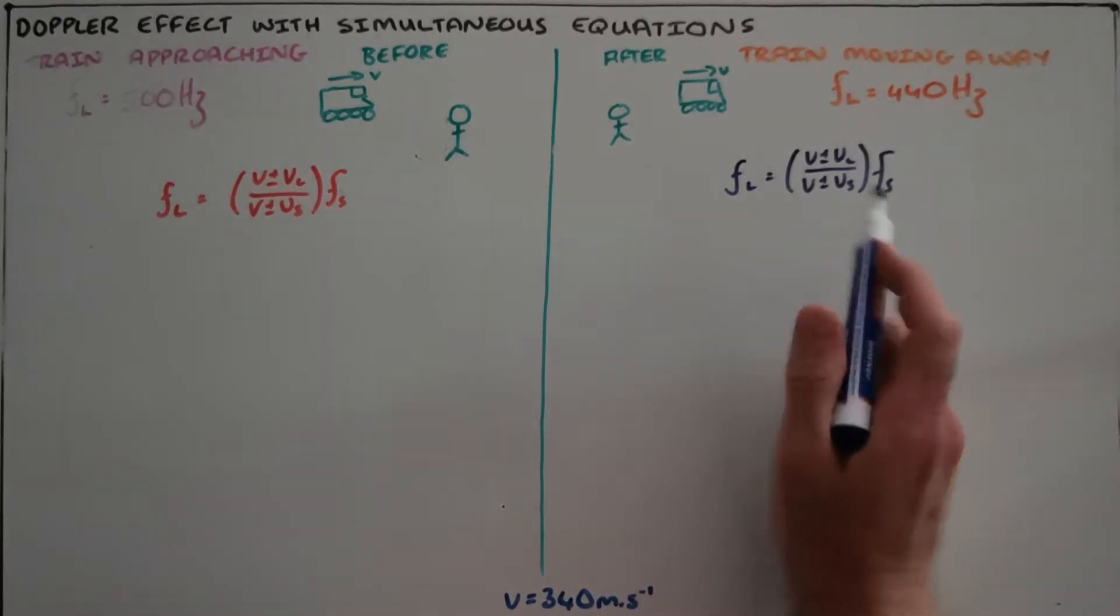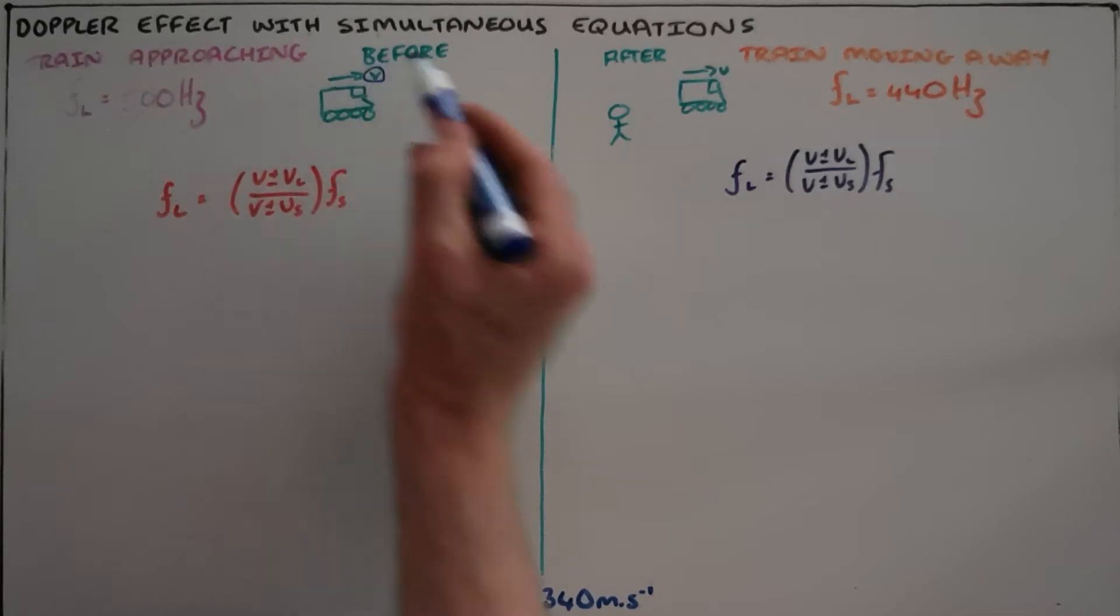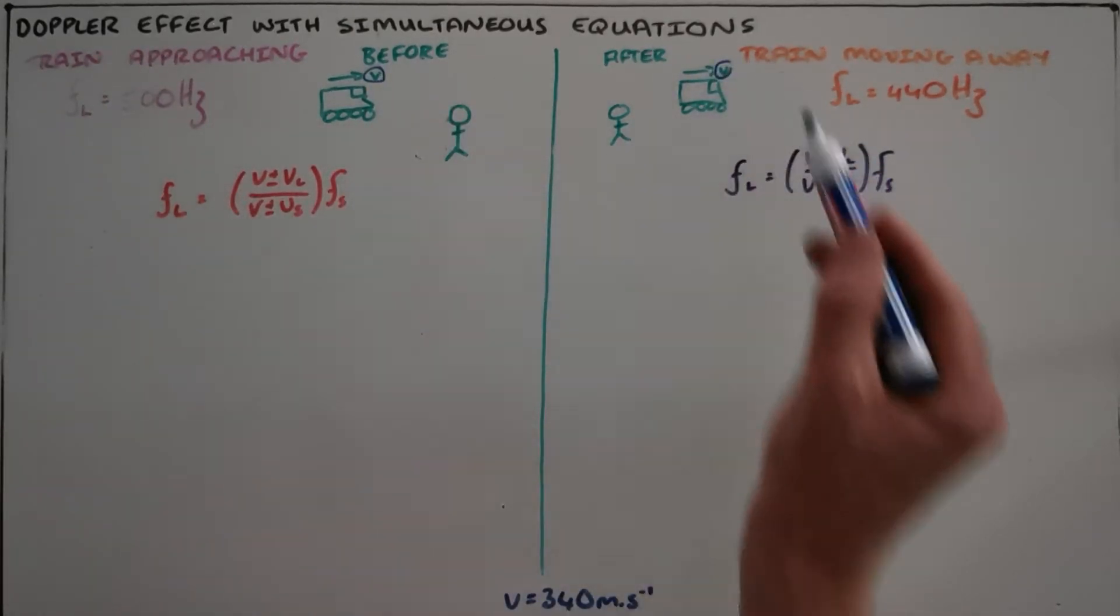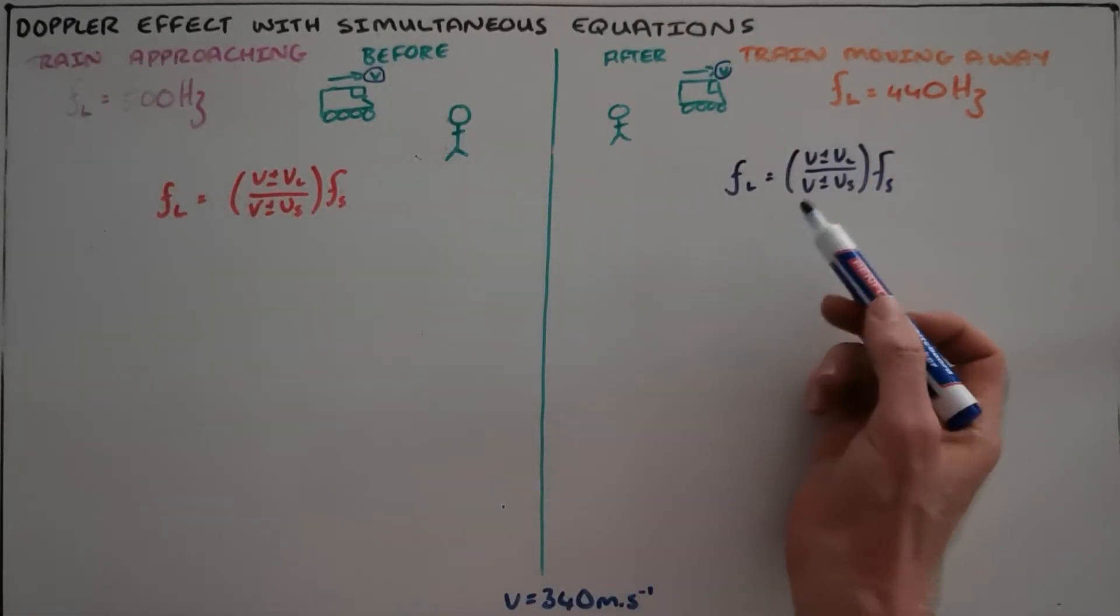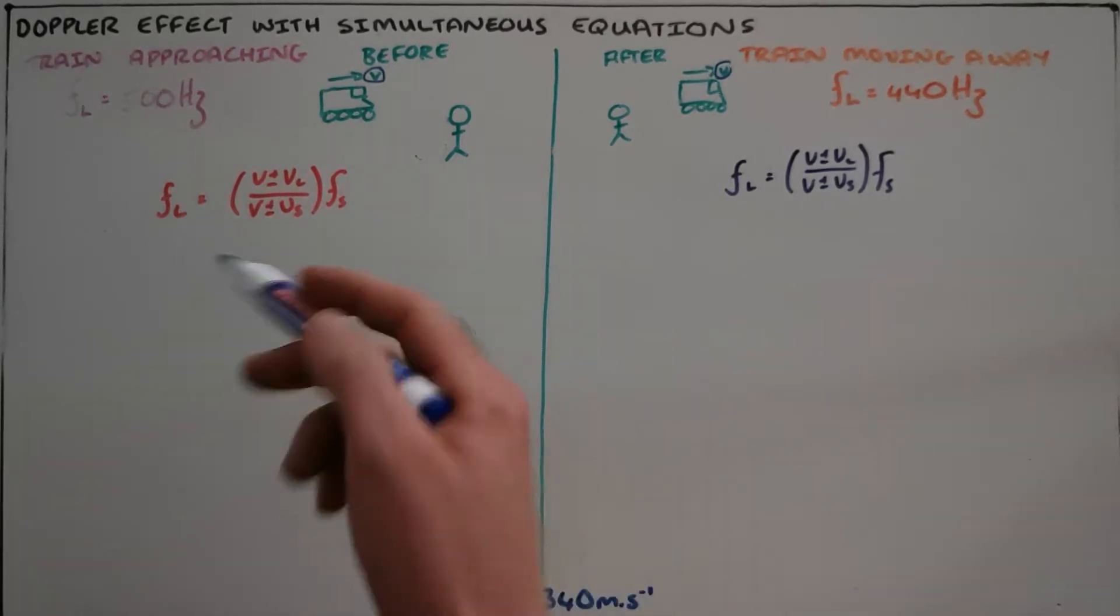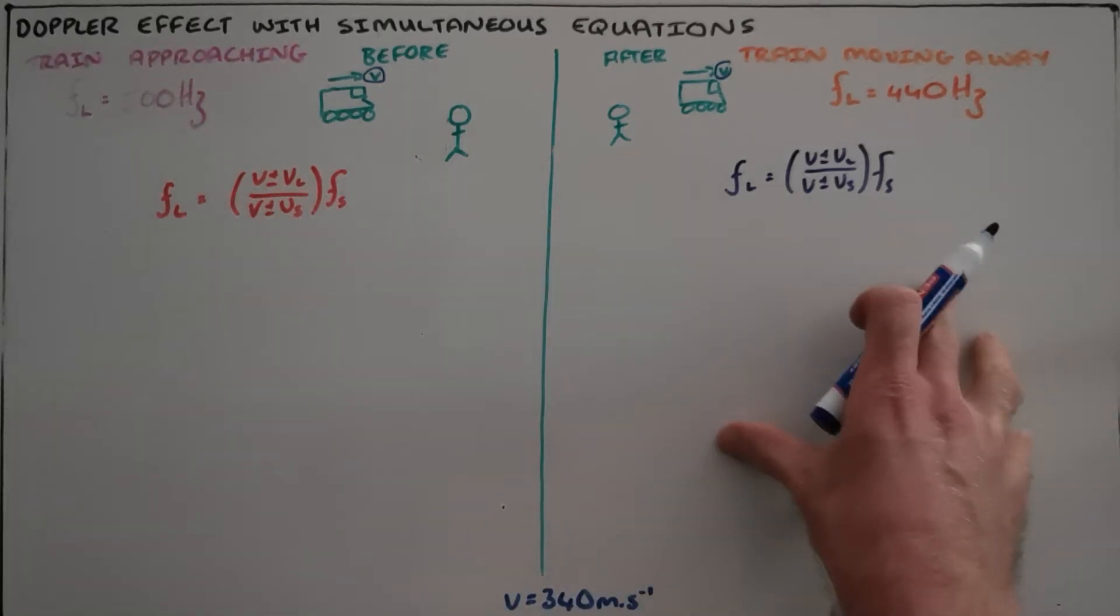Now this question is unique because the velocity of the train has remained unchanged and we have two observed frequencies, but we do not have the source frequency. So we have two unknowns, but because there are two separate instances here, we can see this as two equations with two unknowns.